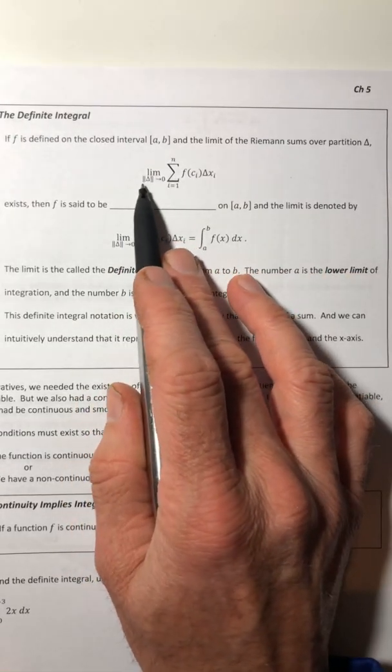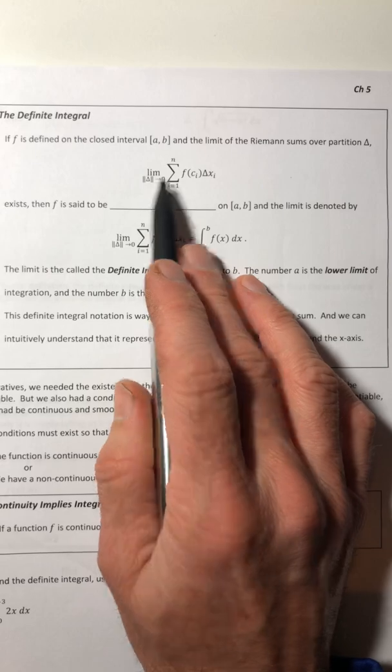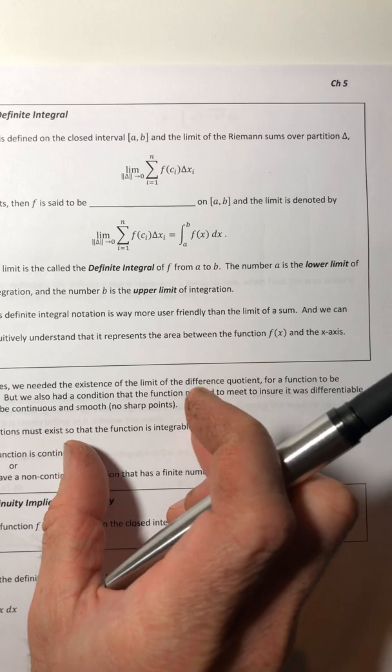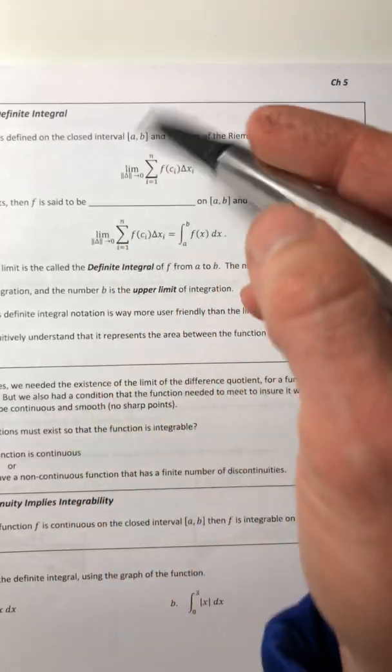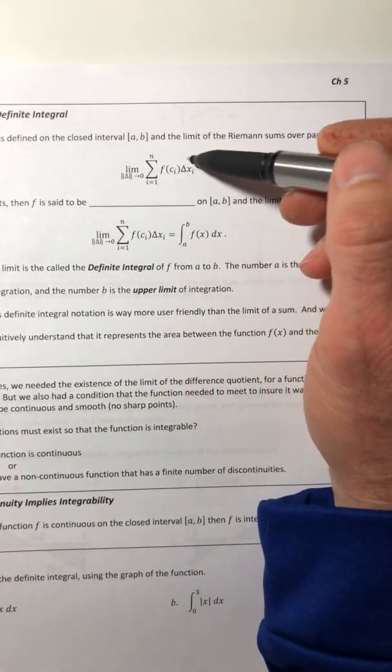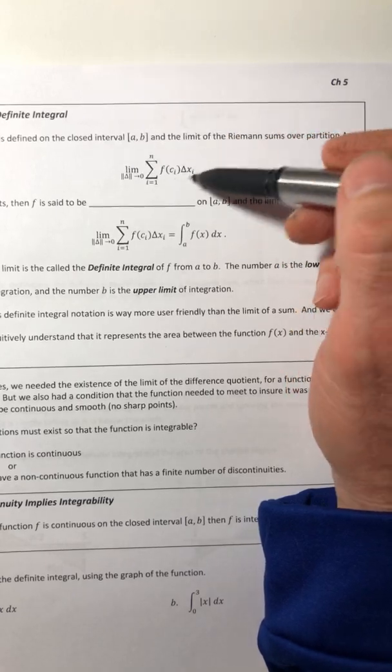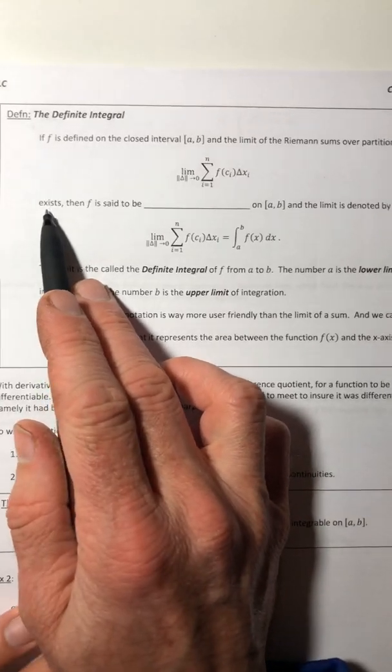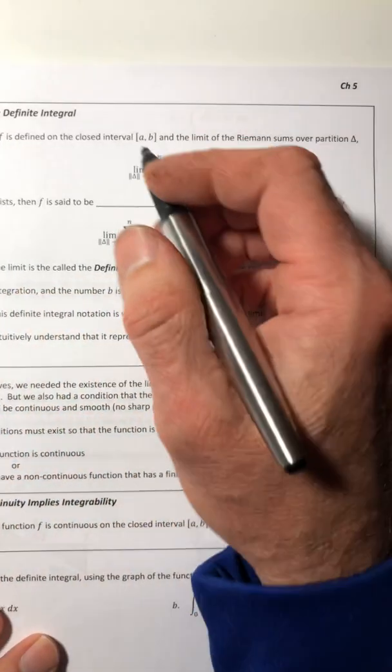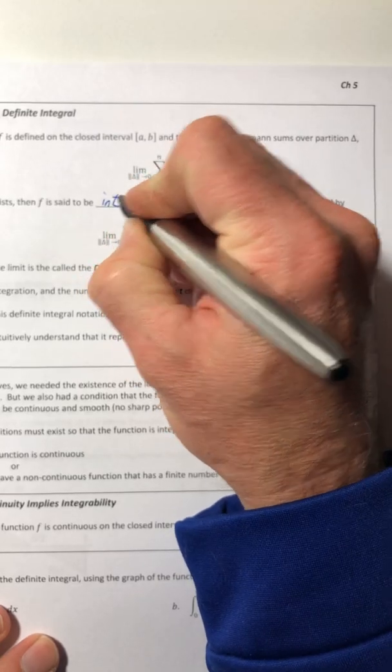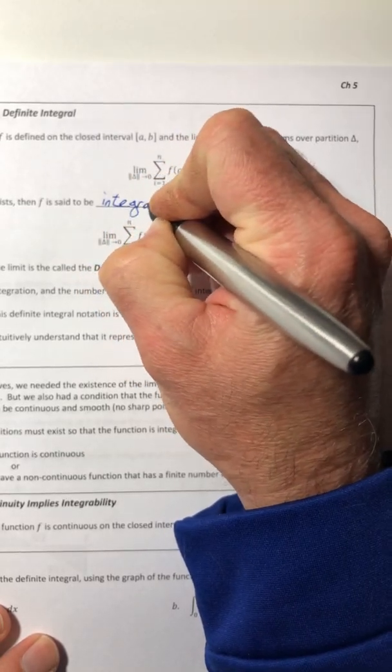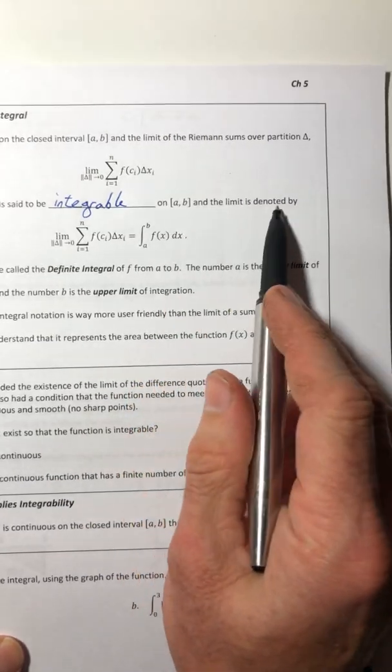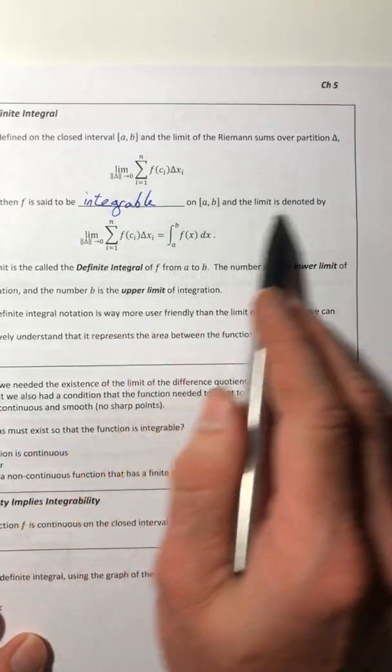then the limit of the norm as it approaches zero, so if we take that largest rectangle, if we make sure that its width is approaching zero of the sum that represents the sum of all those rectangles, well then this limit exists,